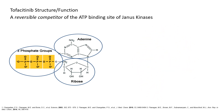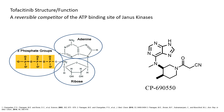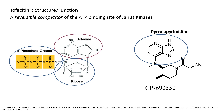Going back to tofacitinib — as a competitive inhibitor of the ATP binding site, it inhibits ATP from binding. To do this, it must have a structure that mimics ATP. Looking at the adenine moiety: adenine is a nucleic acid derivative of the purine series, and tofacitinib uses the pyrrolopyrimidine series, which has a very similar chemical structure.